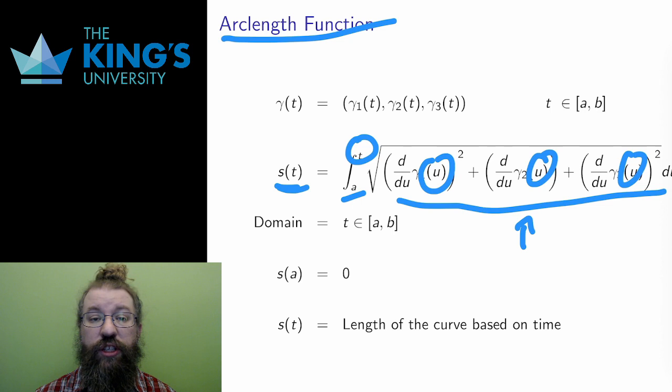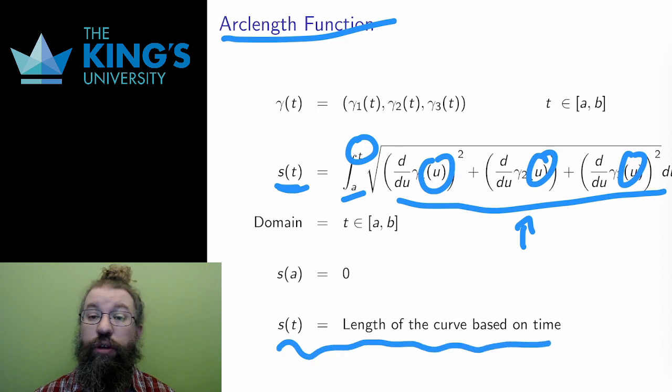If the curve starts at t equals 0, then S of t is how far the curve has traveled in t units of time. If the units are seconds, then S of 3 is how far the curve goes in 3 seconds, S of 7 is how far the curve goes in 7 seconds, and so on.